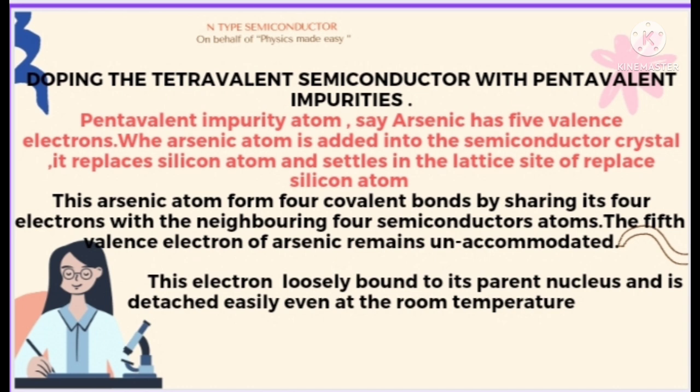The first type is the n-type semiconductor, which is formed by doping a tetravalent semiconductor with a pentavalent impurity. For example, arsenic, which has five valence electrons in its outer shell. When an arsenic atom is added into the semiconductor crystal, it replaces a silicon atom and settles in the lattice site of the replaced silicon atom.